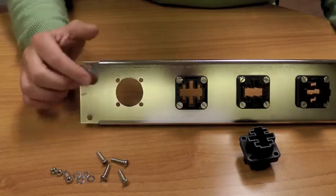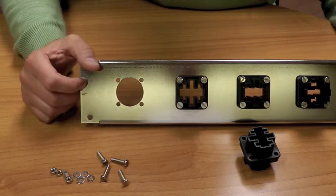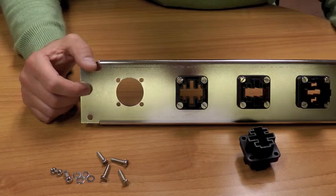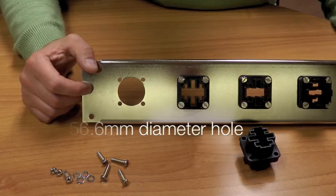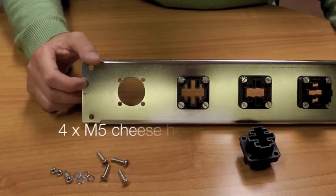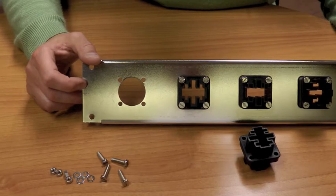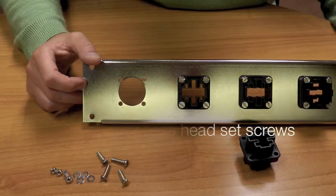For the B430 you require a 36mm diameter hole. For the B450 being larger requires a 56.6mm diameter hole. The B430 uses M5 cheese head set screws. The B450 uses M6 cheese head set screws.